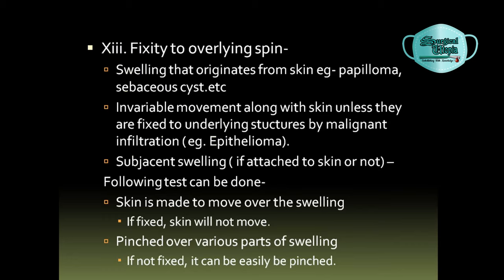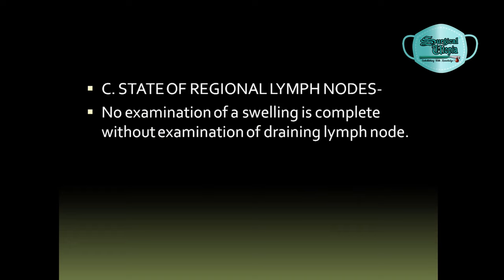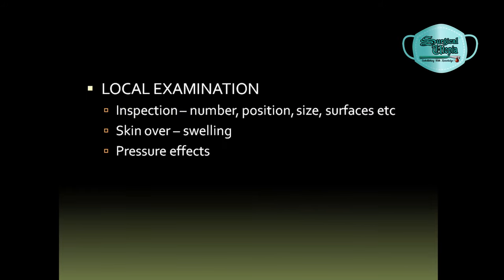With reference to the swelling, fixity to the overlying skin should be checked. Swellings that originate from the skin — such as papilloma and sebaceous cysts — move along with the skin unless fixed to the underlying structure by malignant infiltration, as in epithelioma. To test fixity, the skin is made to move over the swelling; if it is fixed, the skin will not move. If the swelling is not fixed to the skin, the overlying skin can easily be pinched. The relation of the swelling to surrounding vital structures, including proximity to any artery or nerve, should also be assessed. The state of regional lymph nodes must be examined, inspecting for number, position, size, and surface of the lymph nodes.